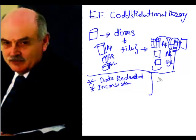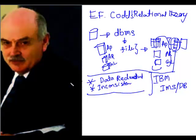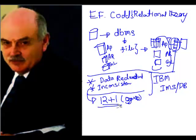During the same time when EF Codd was writing his relational theory — he was an IBM scientist, by the way — IBM also released a product called IMSDB. This was also a file-system-type product, and he said there are lots of problems in file-system-based applications. It needs to be modified with new rules. He gave 12 plus 1 — a rule 0 also — so total 13 rules. These 13 rules were covering and correcting all the file problems, and if anybody develops a database management system following these rules, it would be called a relational database management system.